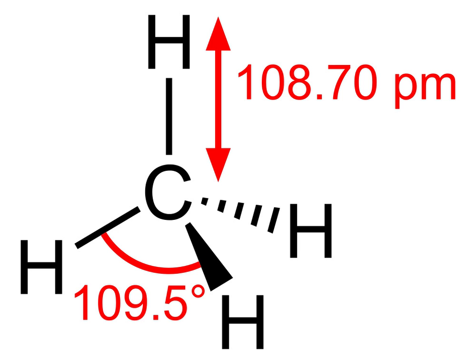Like other hydrocarbons, methane is a very weak acid. Its pKa in DMSO is estimated to be 56. It cannot be deprotonated in solution, but the conjugate base is known in forms such as methyllithium.